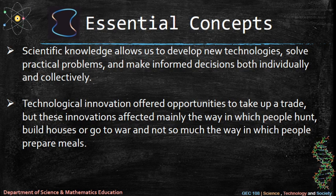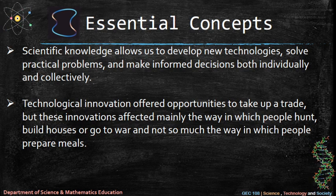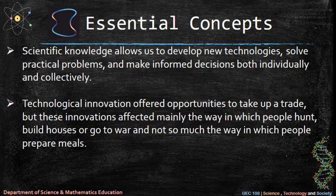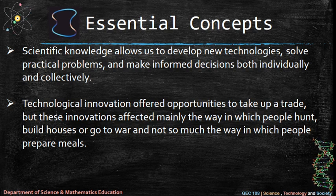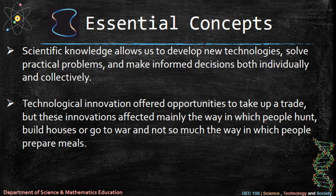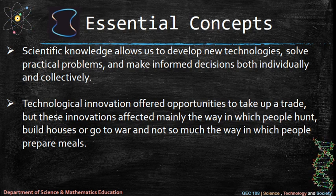Scientific knowledge allows us to develop new technologies, solve practical problems, and make informed decisions both individually and collectively. Technological innovation offered opportunities to take up a trade, but these innovations affected mainly the way in which people hunt, build houses, or go to war — and not so much the way in which people prepare meals.